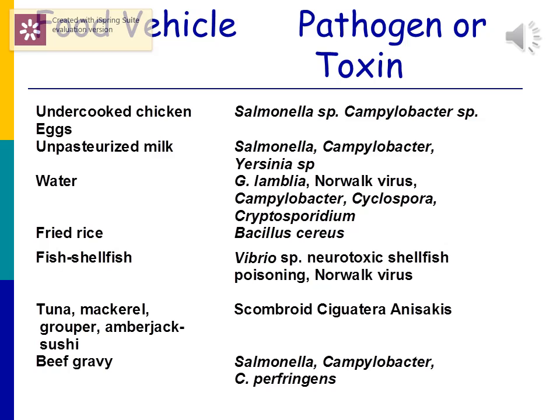If it's rice or fried rice that hasn't been sufficiently warmed up, suspect food poisoning due to preformed Bacillus cereus toxin. Fish or shellfish would point to a Vibrio species or Norwalk virus. Another type of fish like tuna, mackerel, or grouper involves the parasite Anisakis in raw fish. Beef or gravy would suggest Salmonella, Campylobacter, or Clostridium perfringens.